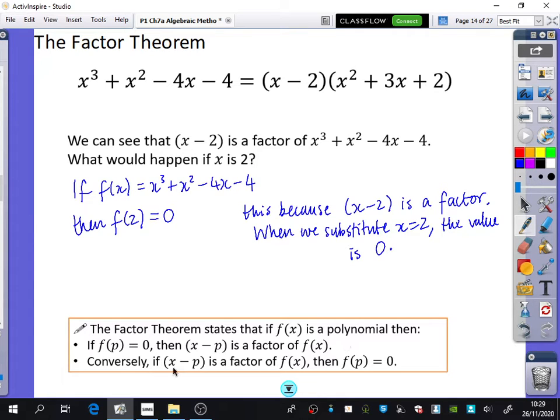Conversely, meaning the other way around, if x minus p is a factor of f of x, then when you substitute p, you should get 0.